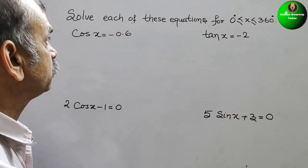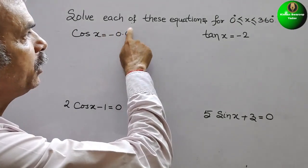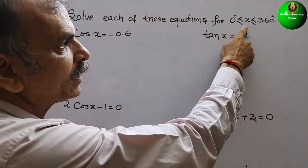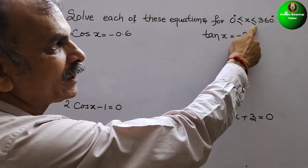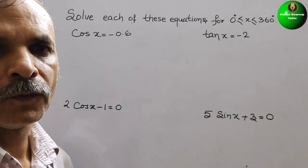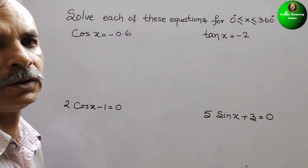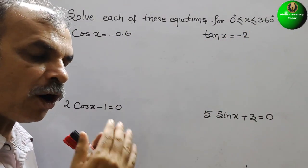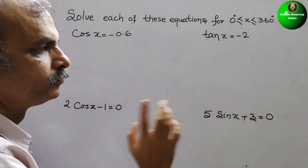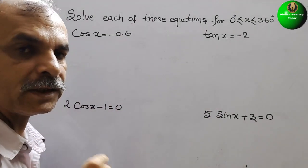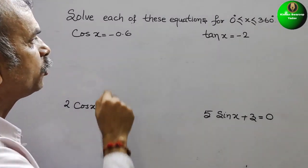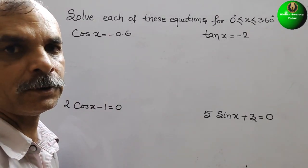Your question is: solve each of these equations for 0° ≤ x ≤ 360°. So we have to find out at what degree this value will come. First, what they have given: cos x = -0.6.